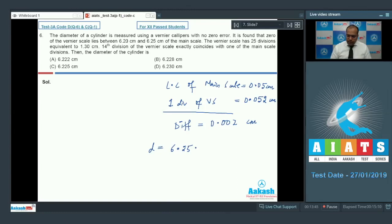6.25 minus 0.002 into 40. So if I solve this it comes out to be 6.222 cm. So option A is the correct answer.